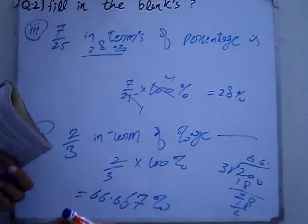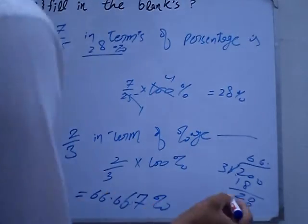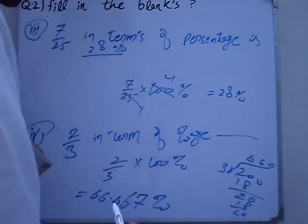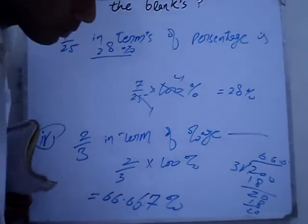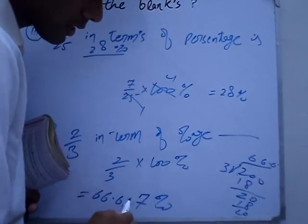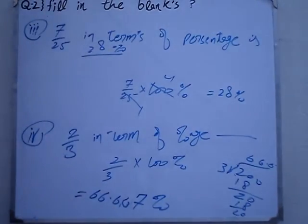66.67%. Since we have a repeating decimal, we round to two decimal places, giving us 66.67% as the final answer.